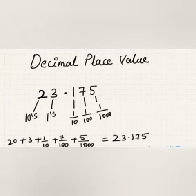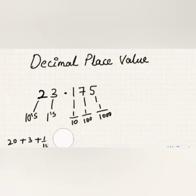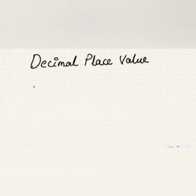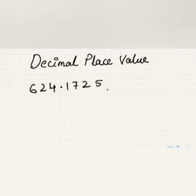Now let us consider one more example and write down its decimal place values, then write it in expanded form. Let us consider the decimal number 624.1725.